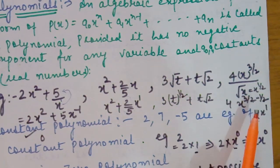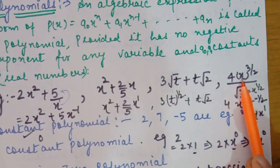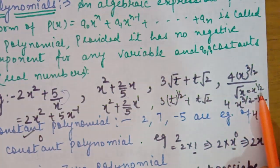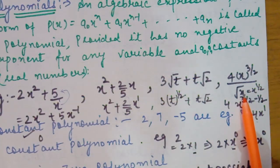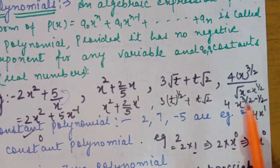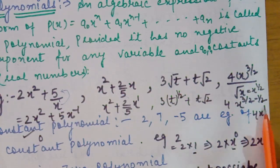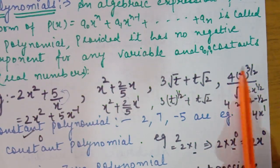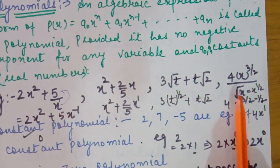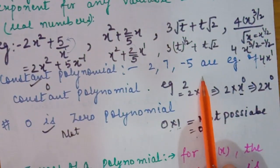Next example: 4x raised to the power 3/2 upon root x. Solving this, the denominator is x raised to the power 1/2. When we shift the denominator to the numerator, powers are subtracted according to laws of exponents when bases are the same and division is performed. The result is 4x raised to the power 1, which is definitely a polynomial. So do not judge by the appearance — always solve first, then decide.